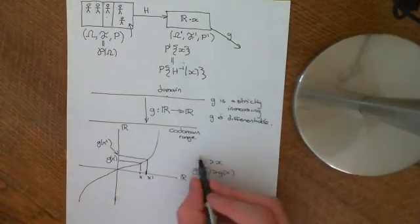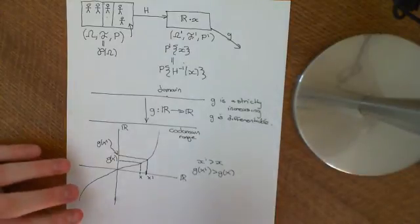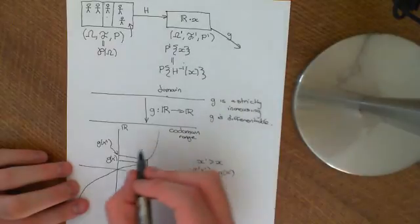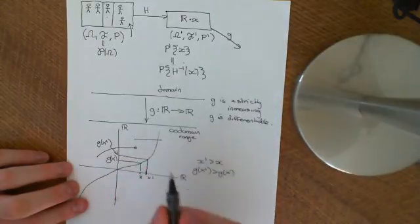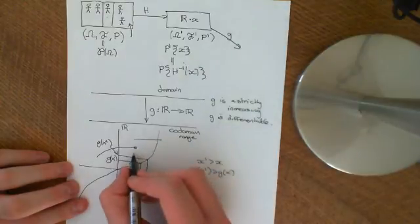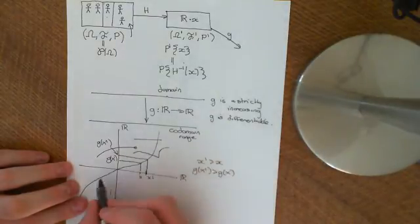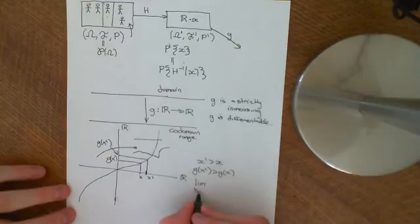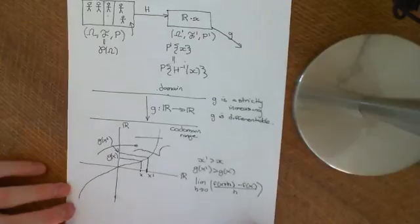Differentiable is a property explored hugely in real analysis. Basically, differentiable means that, firstly, you're continuous — all differentiable functions are continuous. You don't have any points where you have a sudden jump, and moreover it has to have a derivative at every point, so you can't have corners, because at a corner the function doesn't have a derivative. Formally, a function being differentiable means the limit, as h approaches 0, of [f(x+h) − f(x)] / h exists for all x in the real numbers.